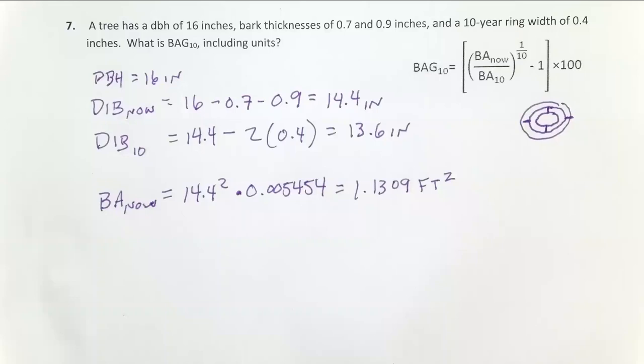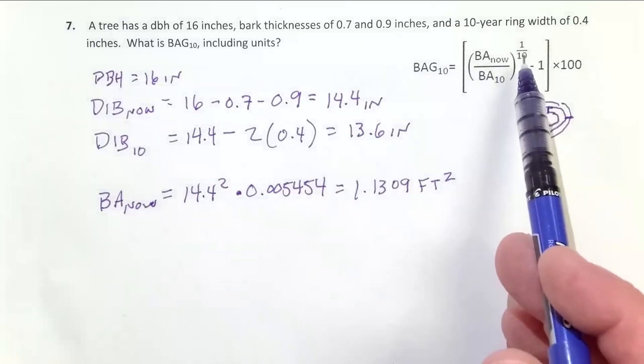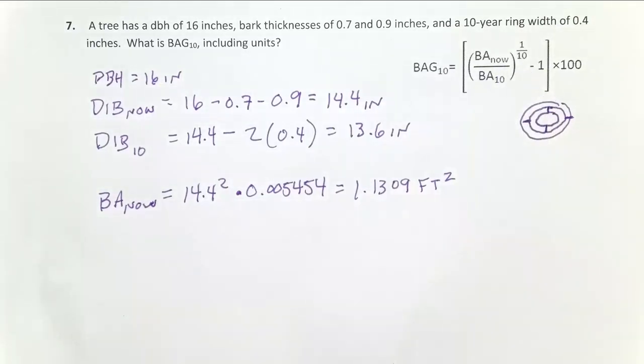Again, on these basal area growth problems, it's important to keep a number of significant digits there on your intermediate calculations. If you rounded this off at this stage, it's going to then be graded into this fraction and raised to this exponent. So that could compound some rounding error. So you probably want to keep four, five, six significant digits there. I wouldn't go much more than that because you're more likely to make mistakes in your calculator.